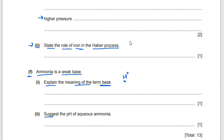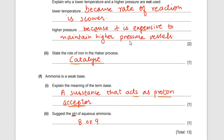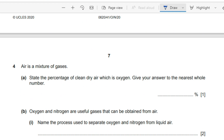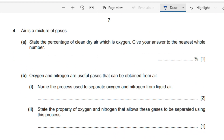Part one of the term suggests the pH of aqueous ammonia. Because ammonia is a weak base, its pH is around 8 to 9. You can write pH is 8 or 9.